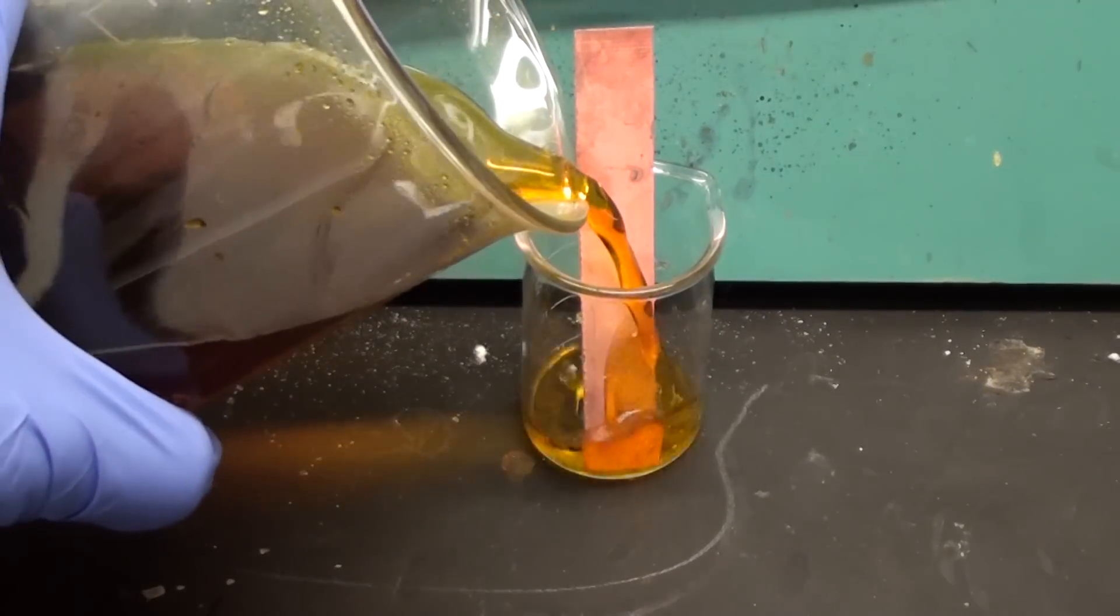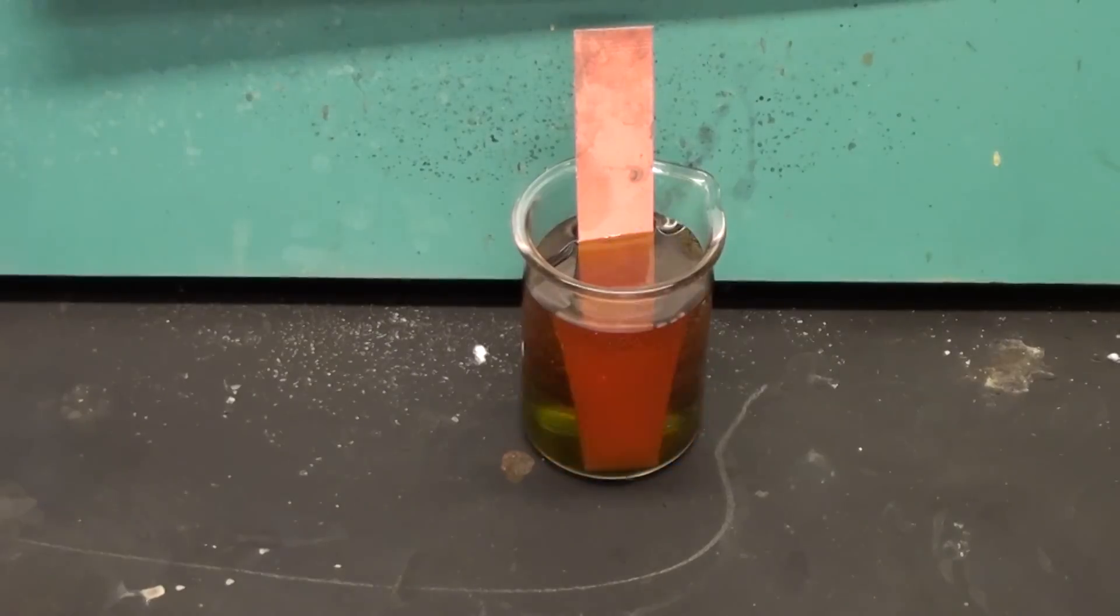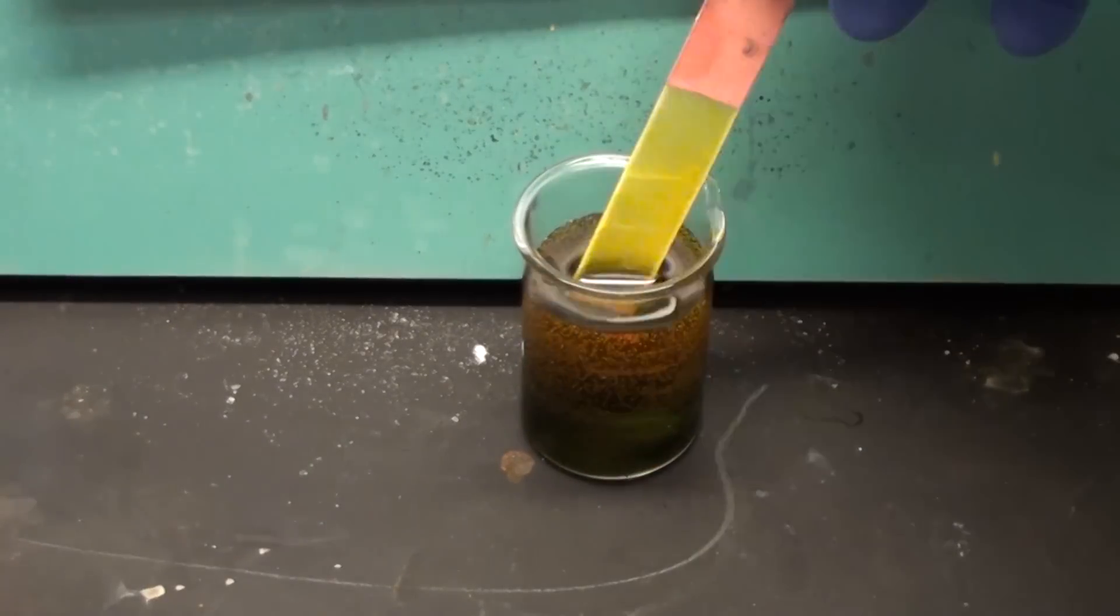To test it we'll just stick in a small strip of bare copper clad board. After a few minutes we have etched off the copper.